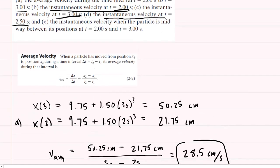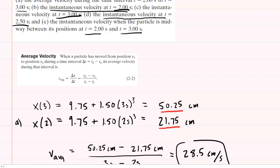Moving on to part E, we need the instantaneous velocity when the particle is midway between its positions at 2 seconds and 3 seconds. The positions were 50.25 centimeters at 3 seconds and 21.75 centimeters at 2 seconds. We want to be midway between those two positions, so we find the average value: x-bar equals 50.25 centimeters plus 21.75 centimeters, divided by 2, which gives you 36 centimeters.